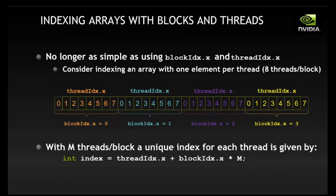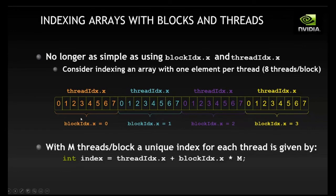Now let's look at the indexing in more detail. Say I have a vector of size 32. How does the GPU understand the index number? There needs to be some way of indexing properly so the GPU doesn't mix up indexes. There are three important terminologies: one is threadIdx, next is blockIdx, and third is M. We'll keep M for later. Let's first look at threadIdx and blockIdx.